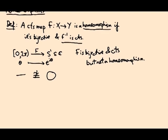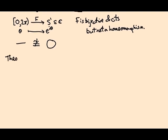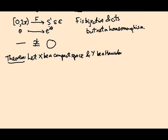But there's a very nice theorem which means you don't have to be too careful. So let X be a compact space and Y be a Hausdorff space. Then any continuous bijection f from X to Y is actually a homeomorphism.